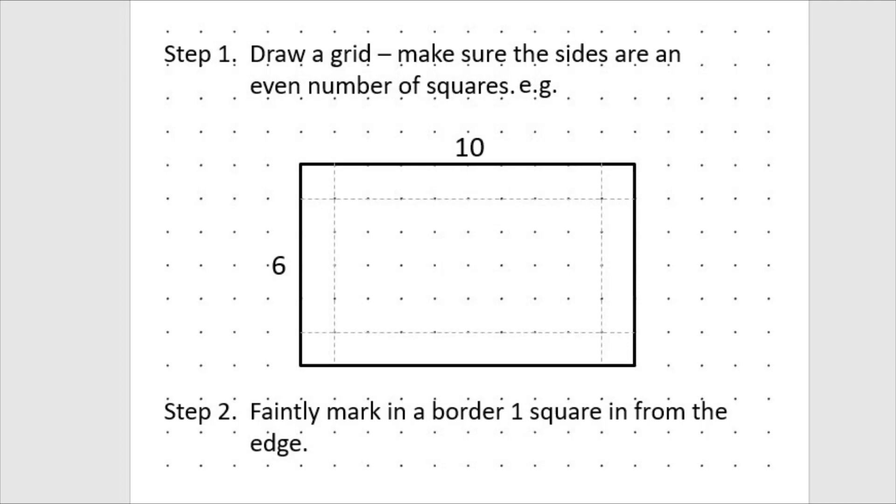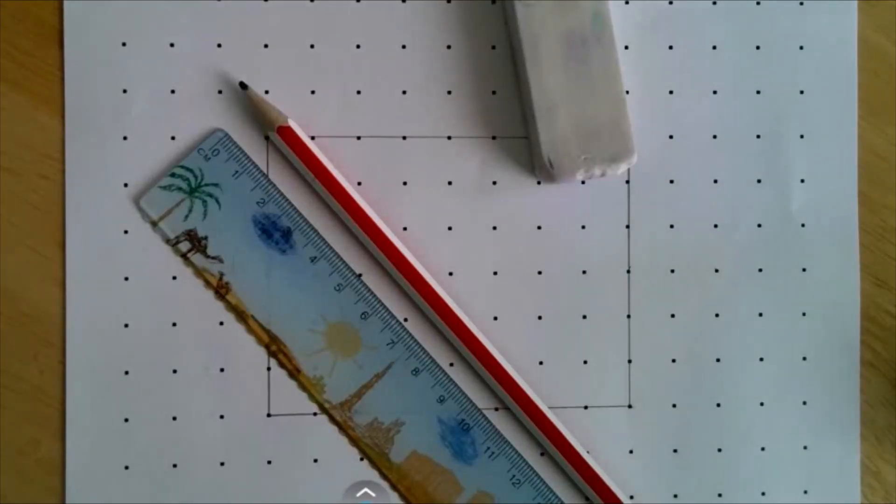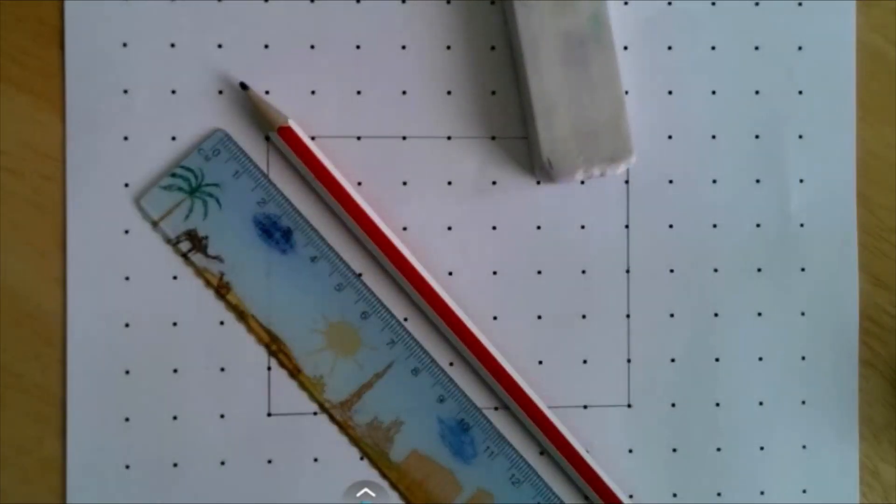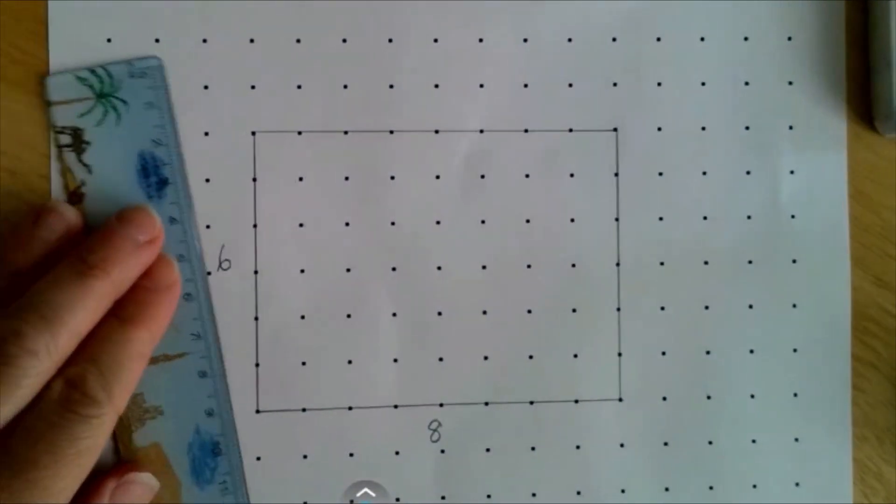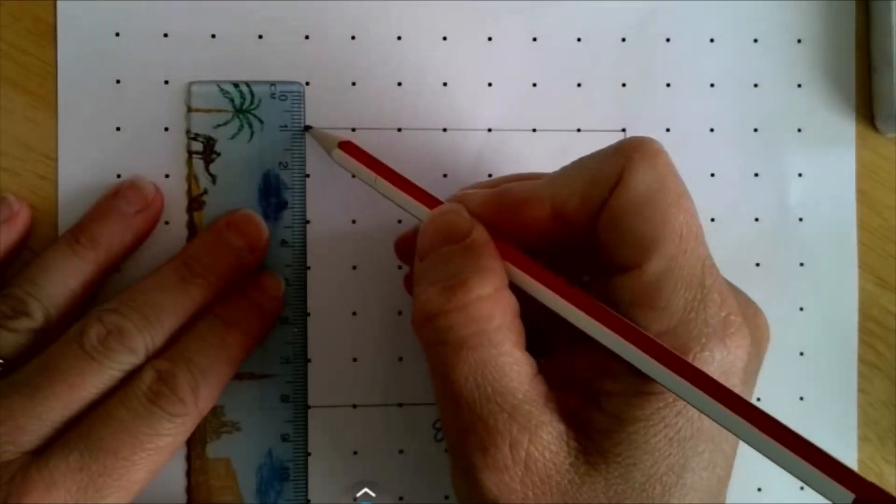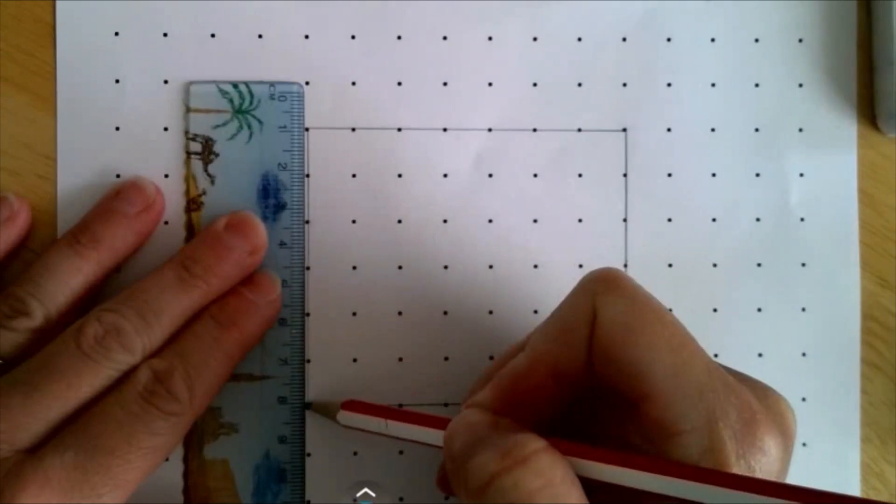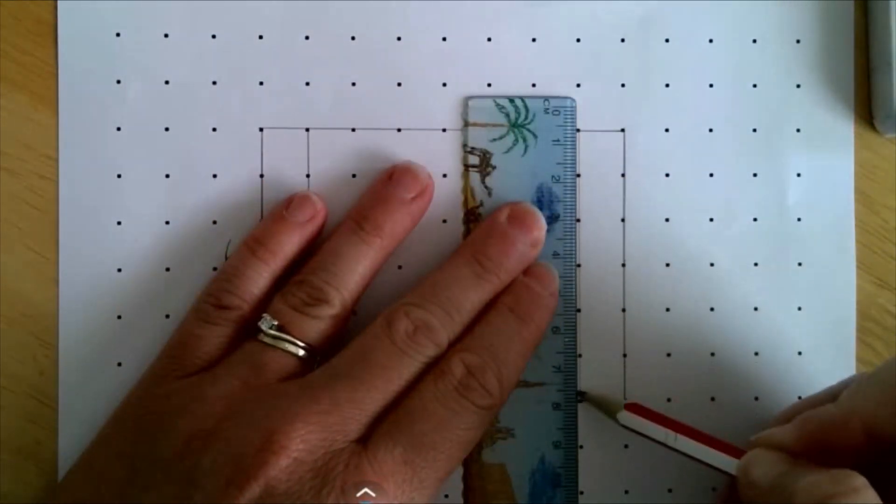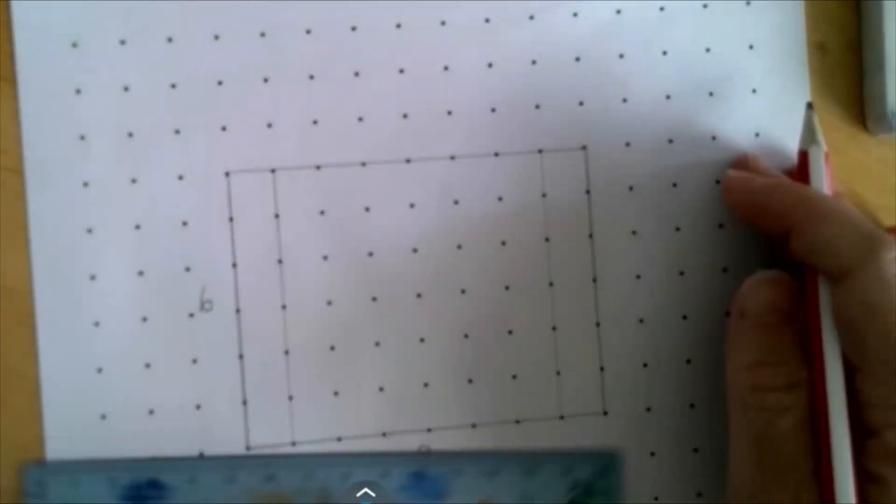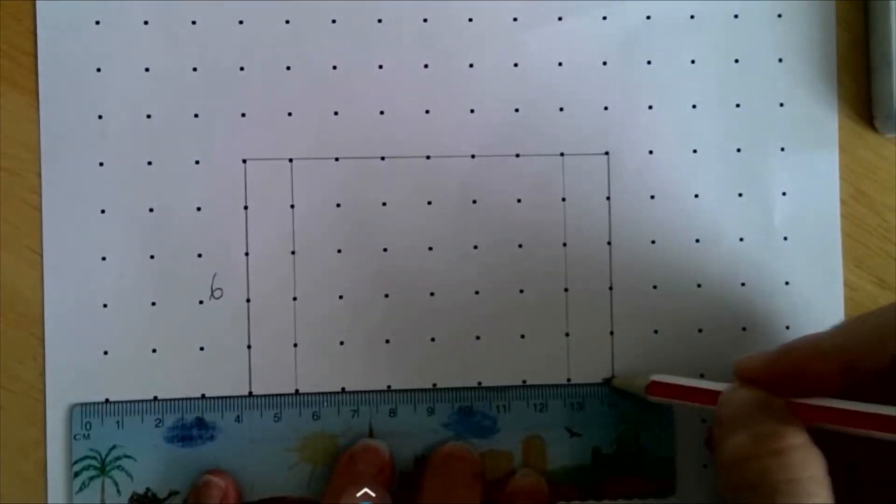So step two is faintly mark in a border one square in from the edge. So switching to my visualiser, I'm going to now do the step two. So faintly, I'm going to be marking in a border from the edge. I only want to try and construct these lines quite faintly, as afterwards I'm going to be rubbing out any lines that I don't need.